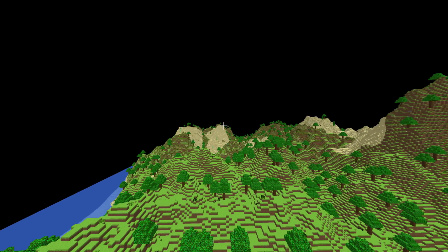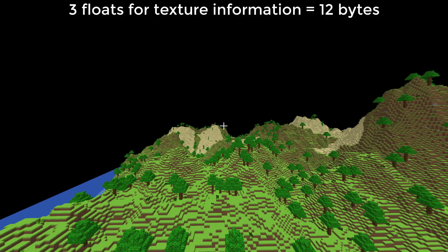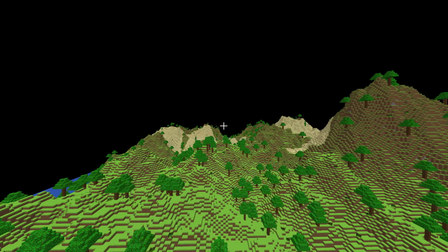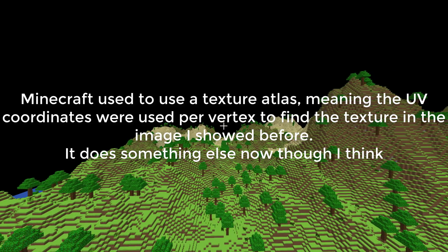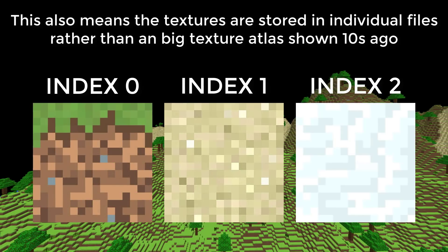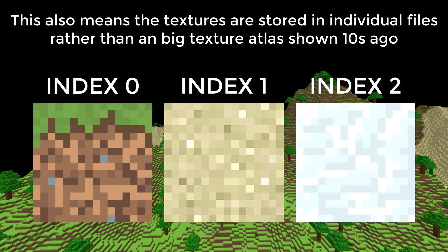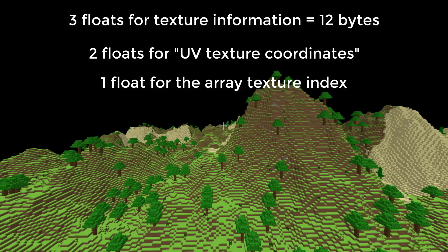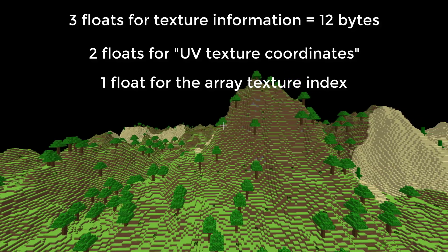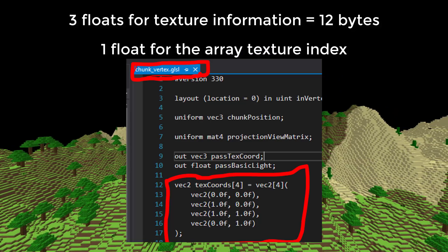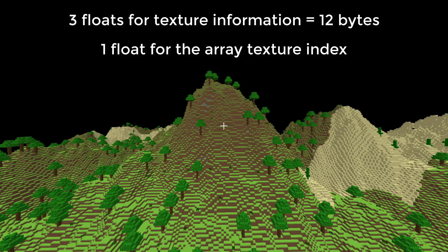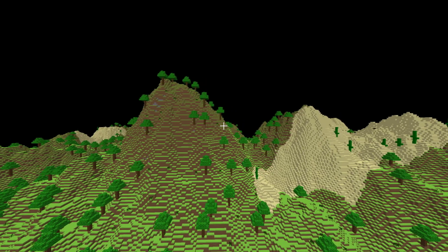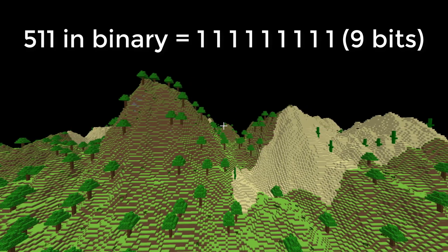We are also storing 3 floats for texture information per vertex — 2 floats for the texture coordinates telling OpenGL what part of a texture to use, and the different block textures are stored in an OpenGL texture array, meaning the third float is the array index telling OpenGL which texture to use for that block face. Since the first two floats don't change from block type to block type, I can completely get rid of those and define them in the vertex shader instead. That means the only thing needed for texture information is the texture array index, and assuming less than 500 blocks in the game, that can be stored using just 9 bits.